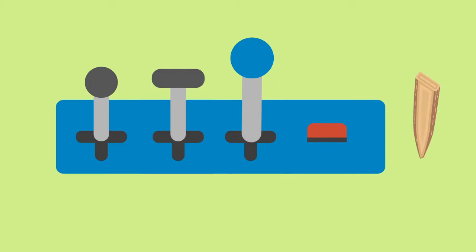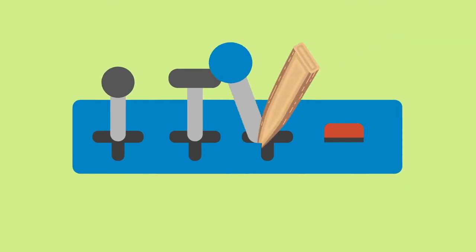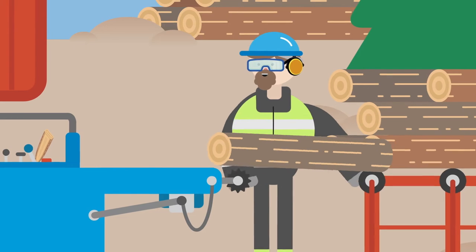To make it easier to feed the logs, he used a piece of wood to wedge the machine switch to the on position and went to lift the log onto the belt.